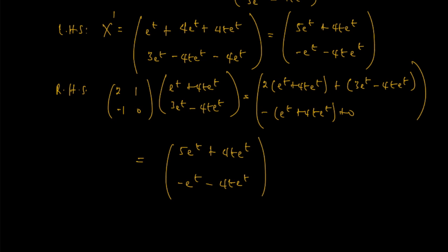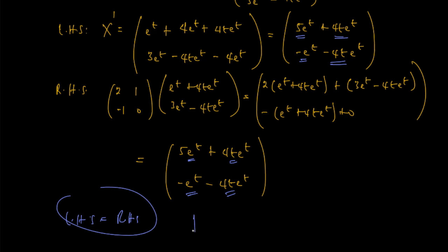So the right-hand side is [5e^t + 4t·e^t, -e^t - 4t·e^t]. Observing that what we got for the left-hand side was [5e^t + 4t·e^t, -e^t - 4t·e^t], we have been able to show that the left-hand side equals the right-hand side. We have proved our result, and that completes the proof.